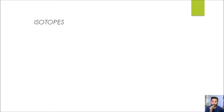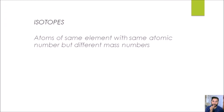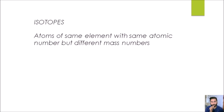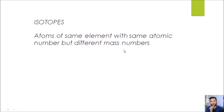Let's start with isotopes. What are isotopes? Isotopes are atoms of the same element with the same atomic number, but they have different mass numbers. Why are the mass numbers different? Because of the difference in neutrons. So an element can have different types of atoms, and these atoms have different numbers of neutrons, but the protons remain the same. Because of the same number of protons, the atomic number remains the same, but the mass number is different.